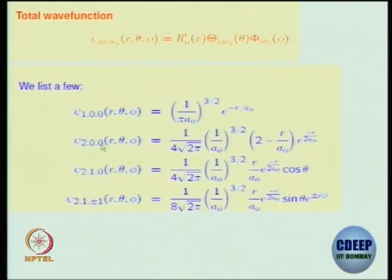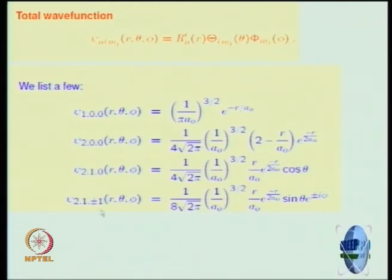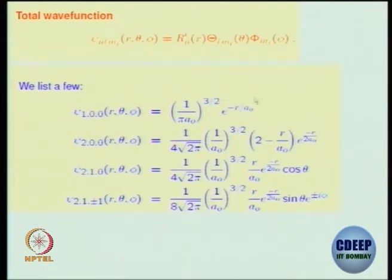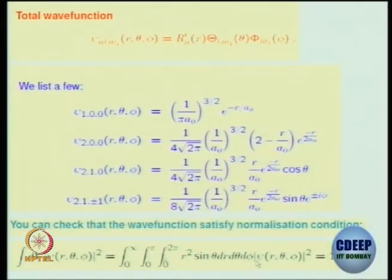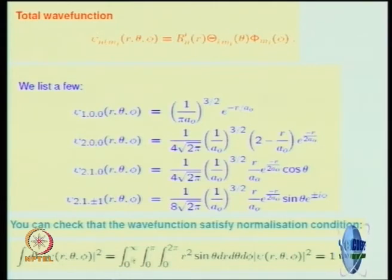Whenever L is 0 and phi is 0, there will be no theta-phi dependence. But if L becomes 1, then there will be a cos θ factor; if M_L equals ±1, you can have e^{±iMφ} where M is ±1. Everything is coming up from the associated Legendre functions — we call this the spherical harmonics. I will put the file today in Moodle and you can verify.